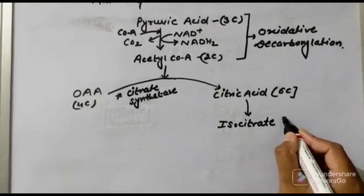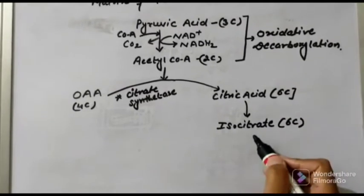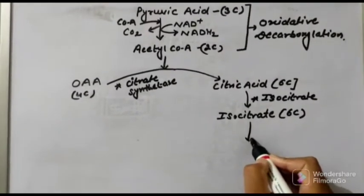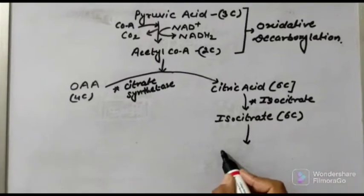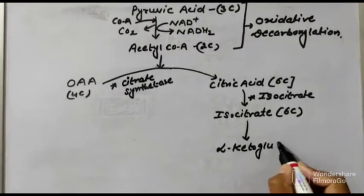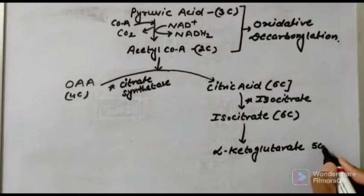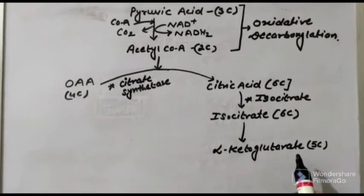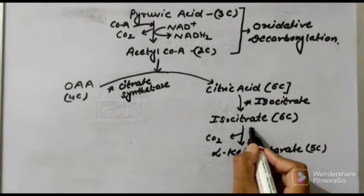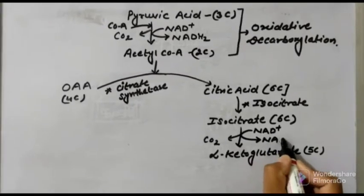This citric acid will convert into isocitrate. Isocitrate is also a six-carbon compound, so the number of carbons remains the same — isocitrate is generally an isomer of citric acid. Now, this isocitrate will convert into alpha-ketoglutarate, which is a five-carbon compound. Wherever there is a loss of carbon, it will come out as carbon dioxide, and wherever carbon dioxide is formed, there will be reduction of NAD⁺ into NADH₂.